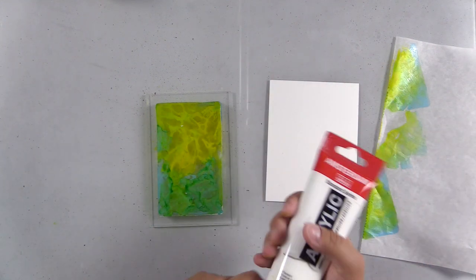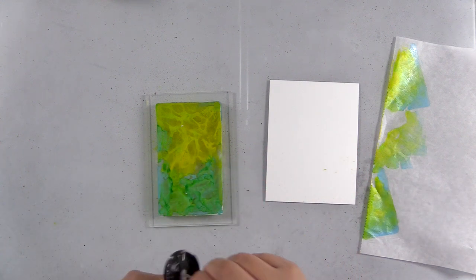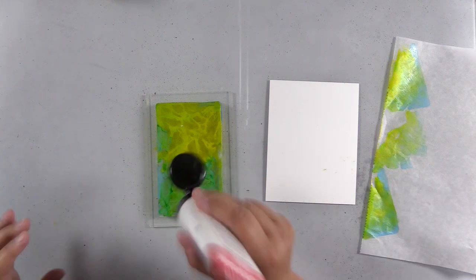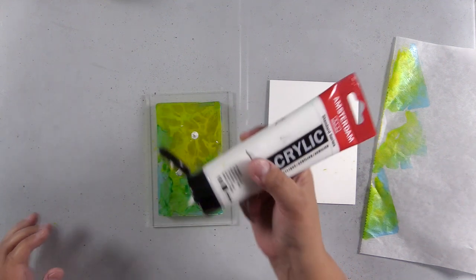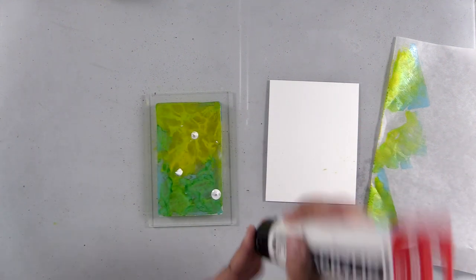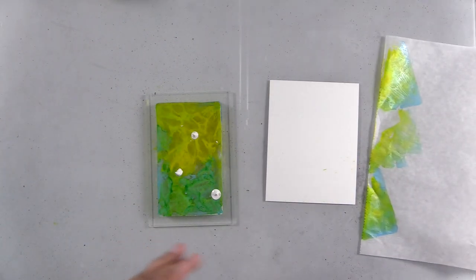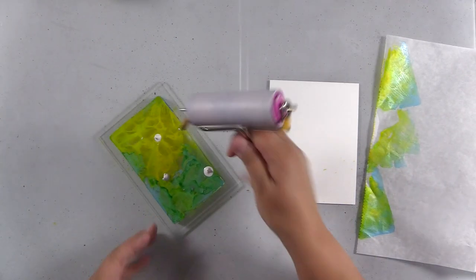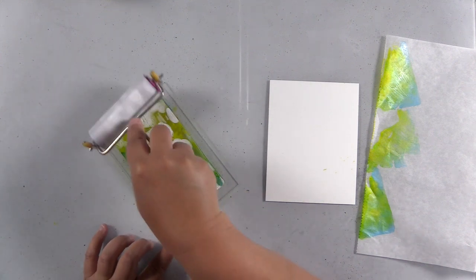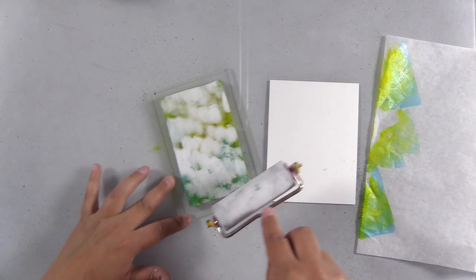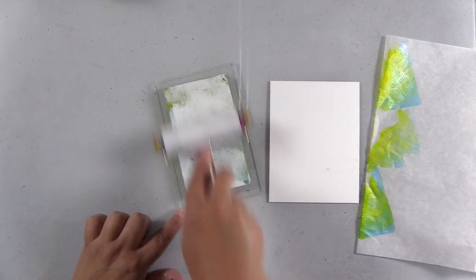I have some white acrylic paint here, and I'm going to add a thin layer. When you're adding your thin layer of paint, you want to be able to see what you have down on the plate through your paint. I'm going to run my brayer over that in one direction, making sure that I lift the brayer in between each stroke.